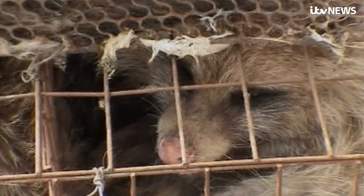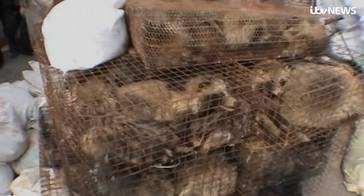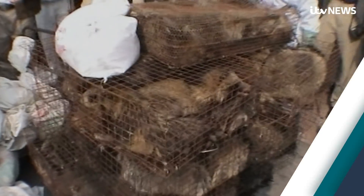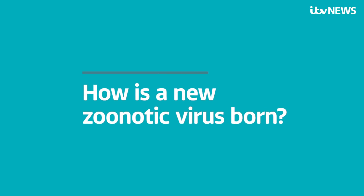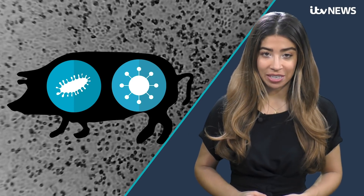The civet cat is in fact the animal from which the SARS coronavirus emerged several years ago. This coronavirus is one we've never seen before. So how is a new zoonotic virus born? It's rare, but it's when a single animal is infected with two related viruses.